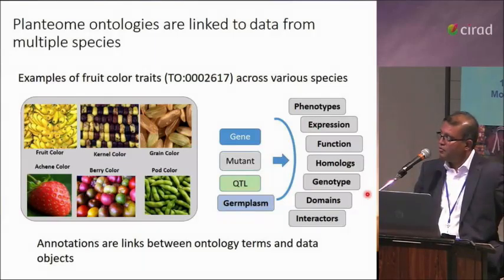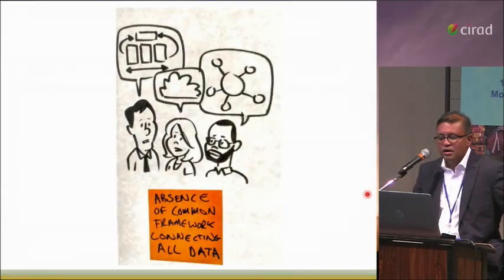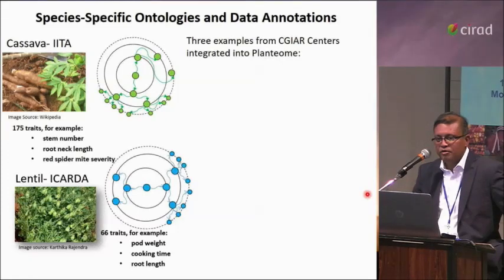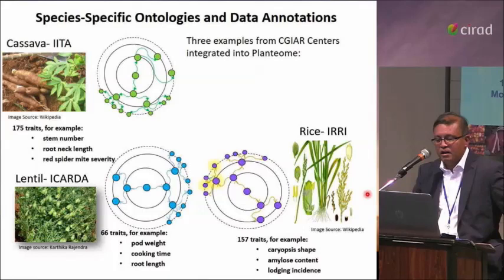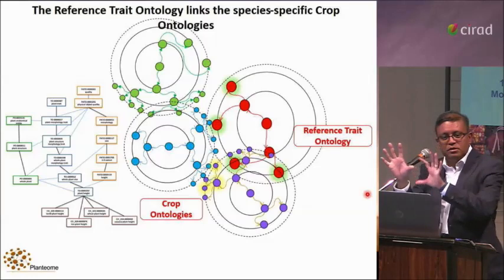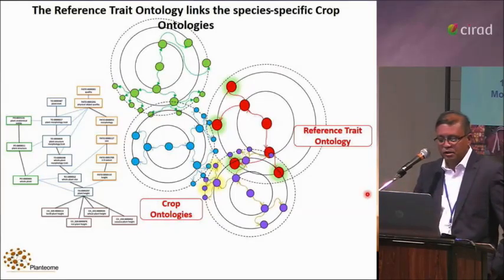People describe the same things differently — for example, everything on the left describes fruit color but with different names. Does the computer know these mean the same thing? We've worked with crop ontology groups who have their own trait descriptor templates. We're creating reference ontologies in Planteome — if every community maps their terminologies to the reference ontologies, then if A equals B and C equals B and D equals B, those communities are automatically connected. That's the network we're building.